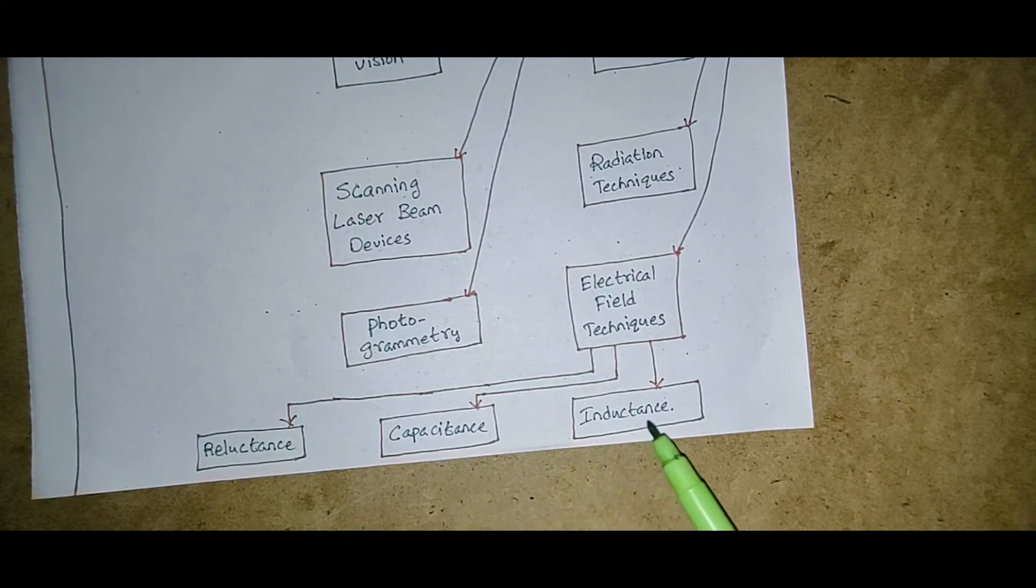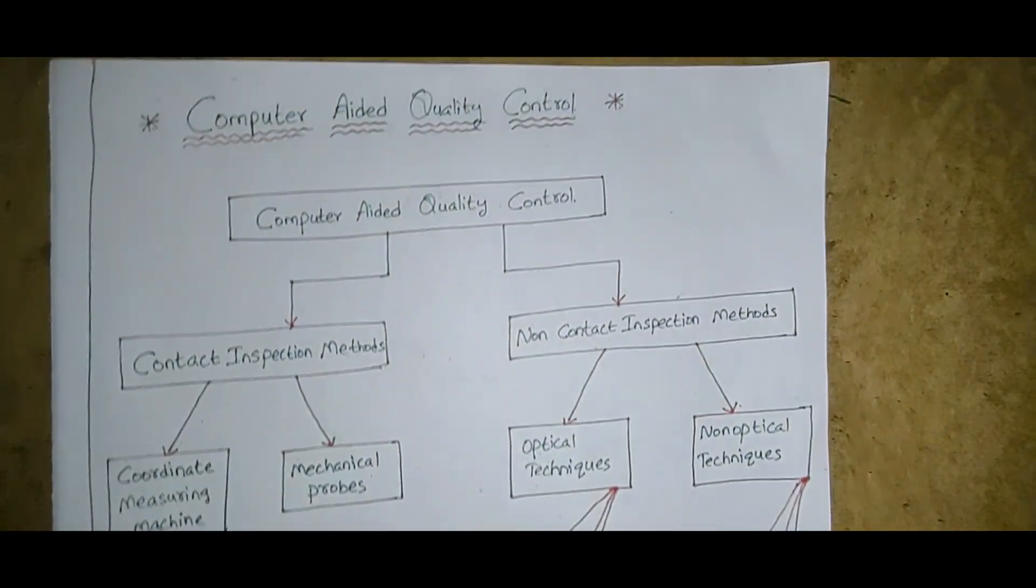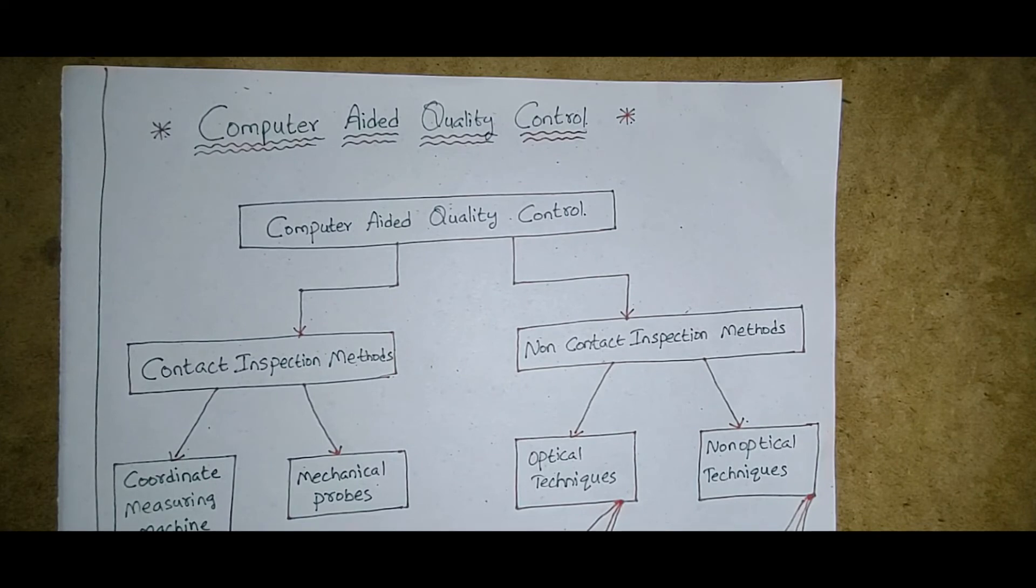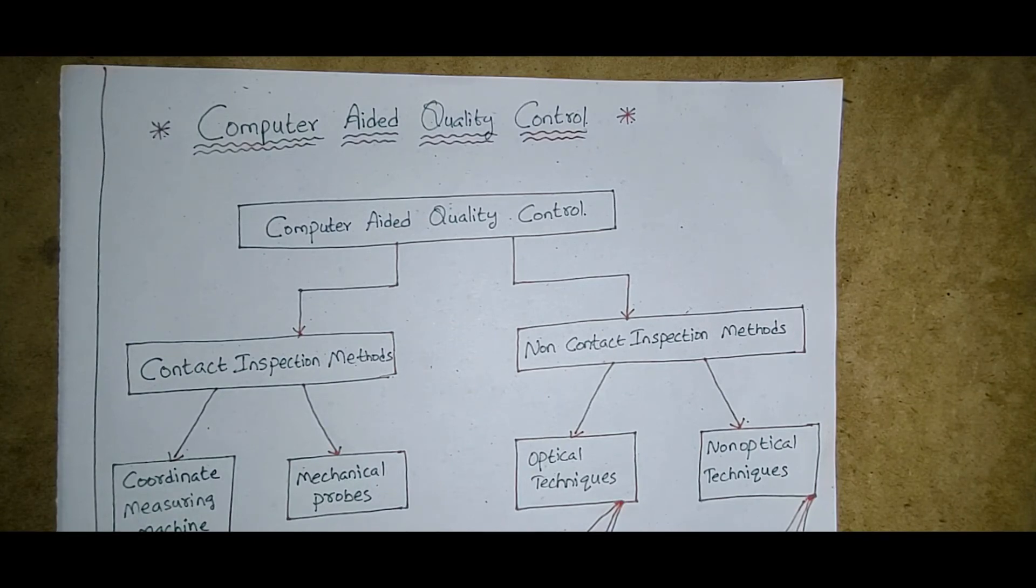If you are getting a question regarding computer-aided quality control, this is the best diagram you can give in your examination. Whether it is for seven marks or eight marks, you have to draw this entire diagram and explain each and every parameter. You can write a sentence for each. If it is for 15 marks, that you can get good marks.